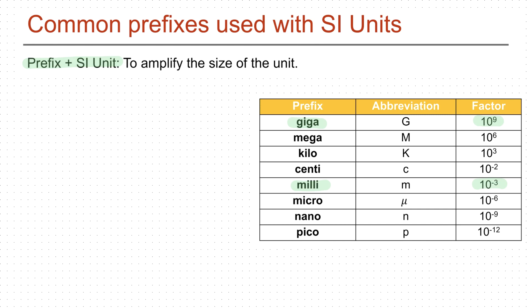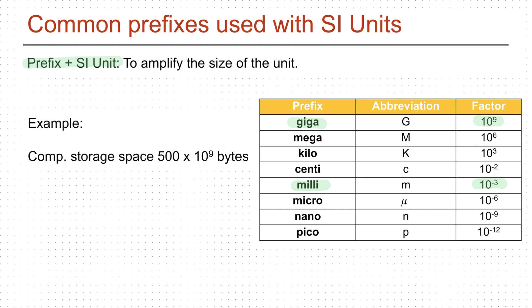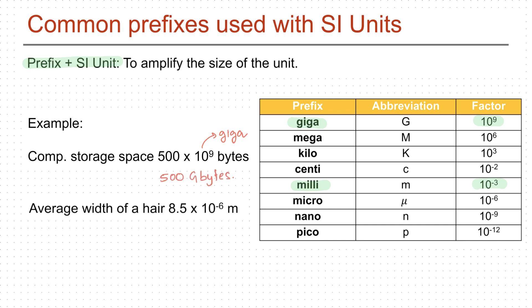For example, the prefix giga increases the size of the unit by 10 to the 9 fold. Similarly, the prefix milli decreases the size of the unit by 10 to the 3 fold. The storage space on a computer is 500 times 10 to the 9 bytes — the 10 to the 9 can be replaced by the prefix giga, written as 500 gigabytes. The average width of human hair is 8.5 times 10 to the negative 6 meters — written as 8.5 micrometers.